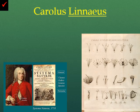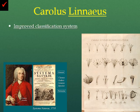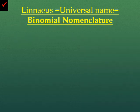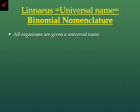Enter a gentleman by the name of Carolus Linnaeus. He went ahead and improved the classification system by basing his grouping upon physical features that these organisms had. Linnaeus has the universal name, also known as binomial nomenclature — think of it like a first and last name, a two-name system. All organisms are given a universal name that are used by all scientists.